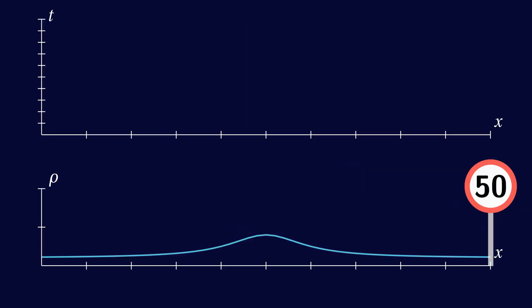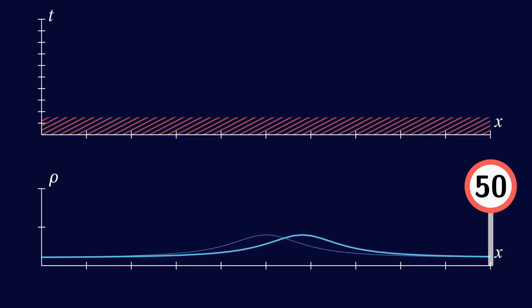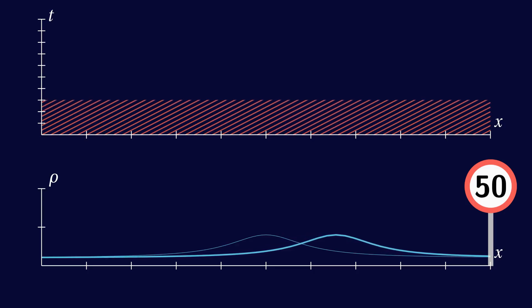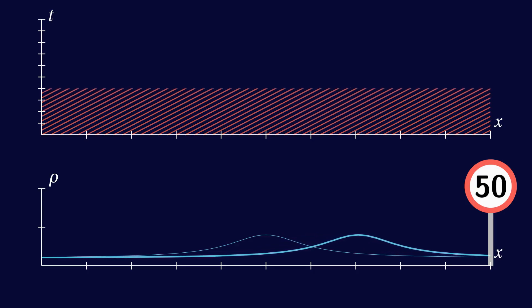Indeed, if traffic is light everywhere, the density profile now just moves to the right. Since all cars are driving the speed limit, the shape of the graph does not change. It just moves to the right uniformly.